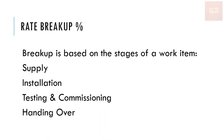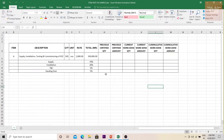What we mean by rate breakup percentage is basically a breakup given for each stage of a work item. Normally any work will have stages such as supply, installation, testing and commissioning, and finally handing over. Every item of work in your project will have all these stages, and a breakup percentage is given for each stage. We'll understand this more clearly with an example.